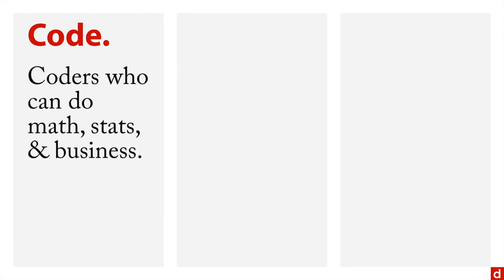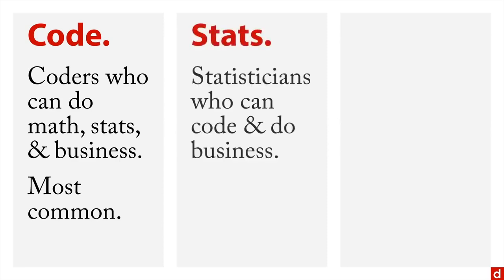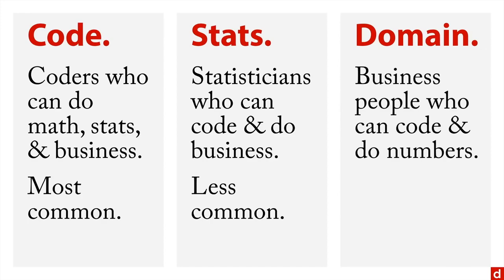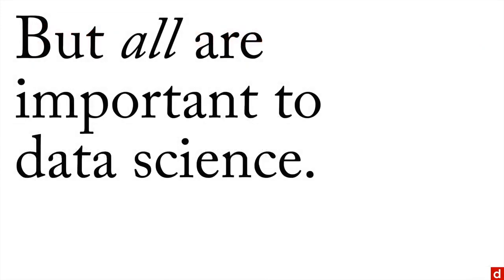So let's think about a couple of backgrounds where people come from here. First is coding—you can have people who are coders who can do math, stats and business, so you get the three things. This is probably the most common; most people come from a programming background. On the other hand, there's also stats or statistics. You can get statisticians who can code and also do business. That's less common, but it does happen. And finally, there's people who come into data science from a particular domain—these are business people who can code and do numbers, and they're the least common. But all of these are important to data science.